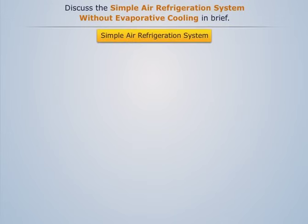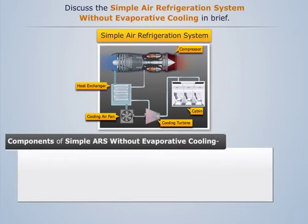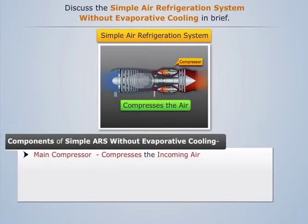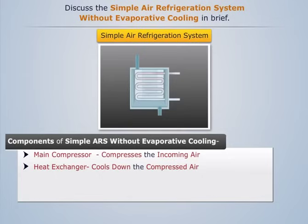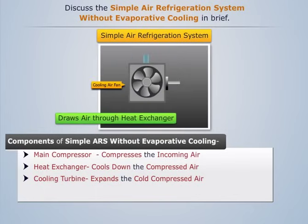A typical simple air refrigeration system without evaporative cooling mainly consists of four parts: a main compressor whose function is to compress the incoming air; a heat exchanger whose function is to cool down the compressed air; a cooling turbine whose function is to expand the cold compressed air to further decrease its temperature; and a cooling fan whose function is to draw the cooling air through the heat exchanger.